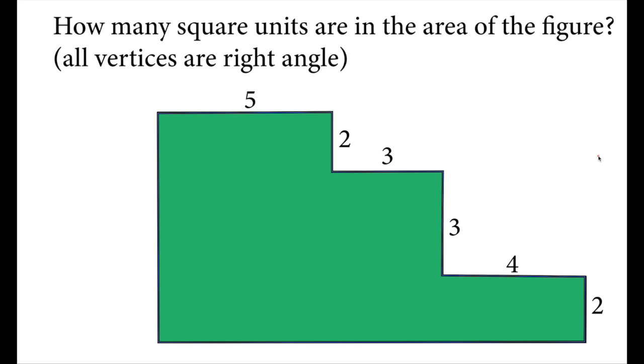Hey there, in this video we will solve this fifth grade math Olympiad question. Let's read the question: How many square units are in the area of the figure? All vertices are right angles, so all corners basically are 90 degrees.